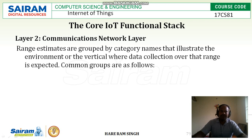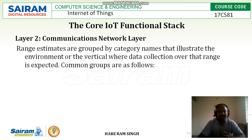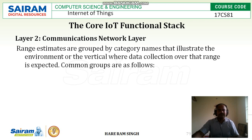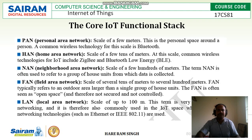Based on the ranges of the sensors or objects — how far they can be detected with the receiver — different networks are categorized. Range estimates are grouped by category names that illustrate the environment for the vertical where data collection over that range is expected. The first group is called PAN, that is the Personal Area Network.